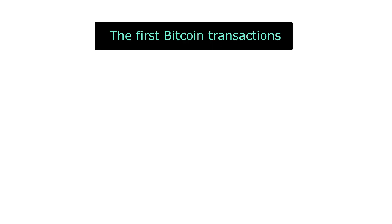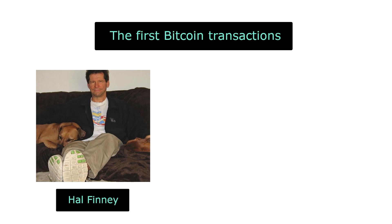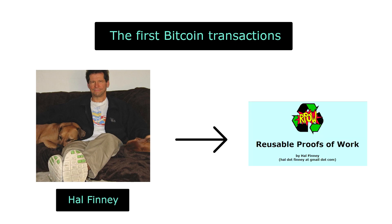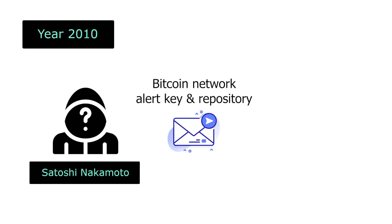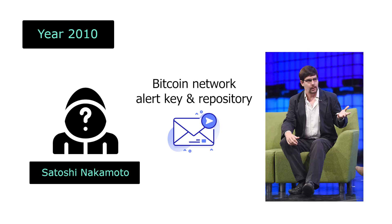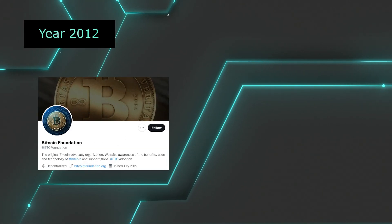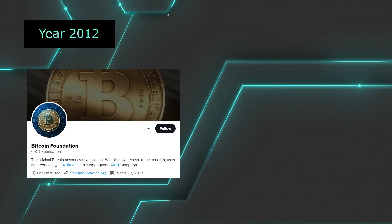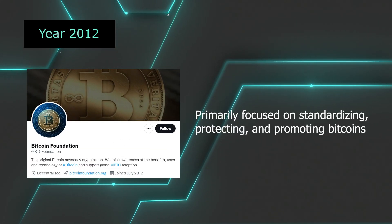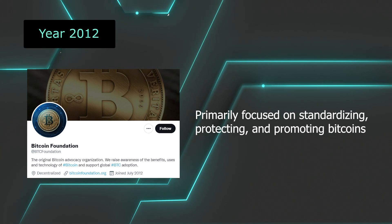The receiver of the first Bitcoin transaction was Hal Finney, who developed the reusable proofs of work with a paper published in 2004. In 2010, Satoshi handed the network alert key and control of the code repository over to Gavin Andrewson before disappearing.